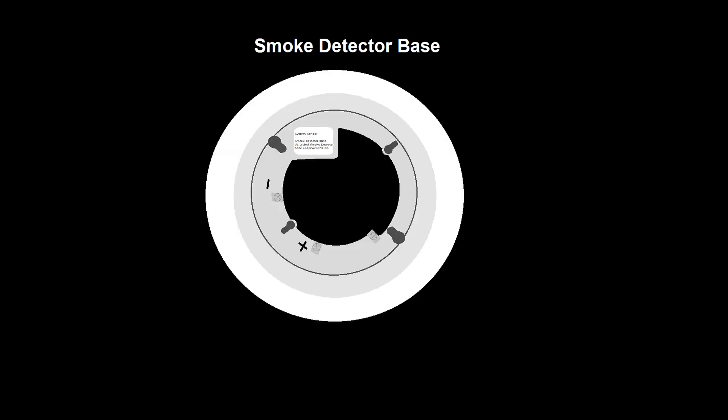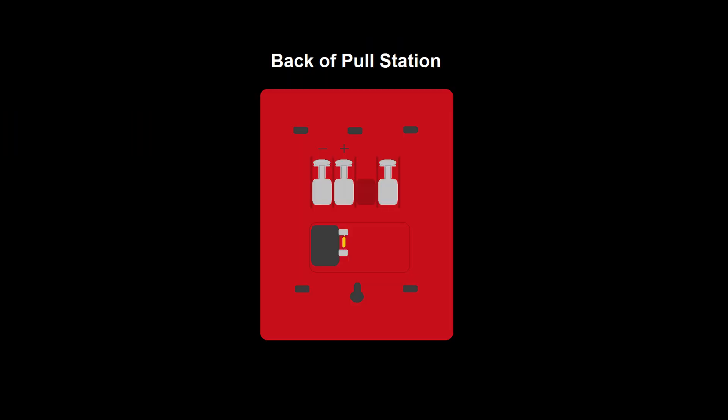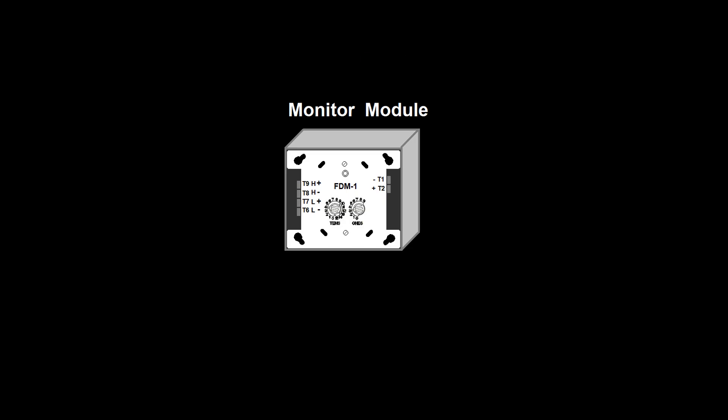Wiring the SLC devices is straightforward and doesn't require much explanation. Every SLC device simply has a positive and negative terminal and the feed wires come into those terminals and the return wires leave from those terminals and go on to the next device. The sounder base has additional terminals for power, but we'll get into that in the future.